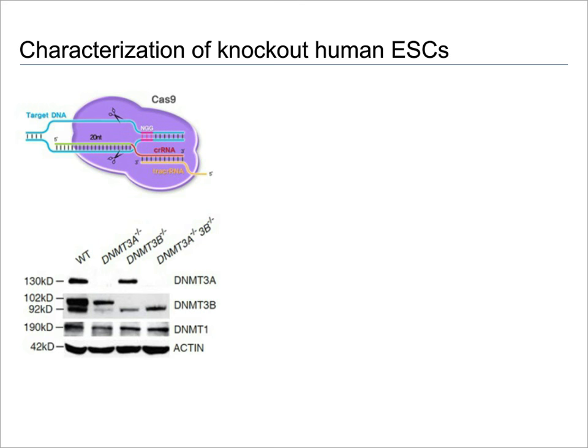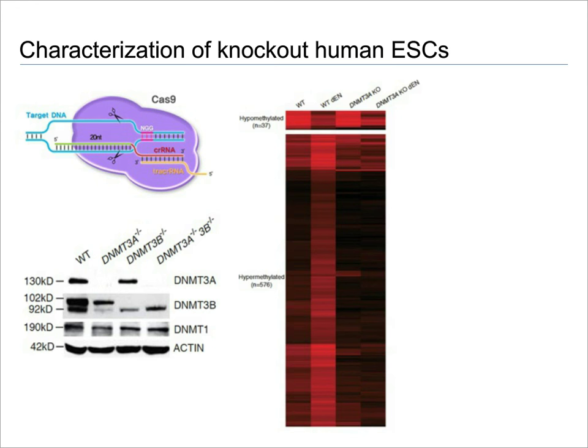To illustrate this with a real example from our lab, we were particularly interested in the DNA methyltransferases. Similar to mouse experiments done before, we deleted DNMT3A, 3B, or both enzymes in human embryonic stem cells. In the mouse, the phenotype is either early embryonic or postnatal lethal. In humans, of course, we cannot do these in vivo experiments. So the first-pass molecular characterization clearly showed that the deletion of 3A essentially blocks all de novo methylation that normally occurs during the differentiation towards endoderm.